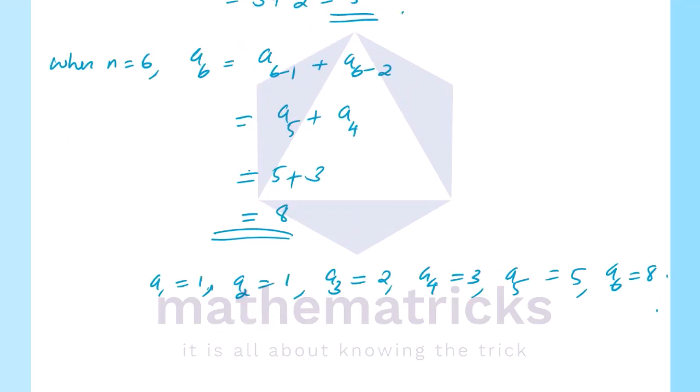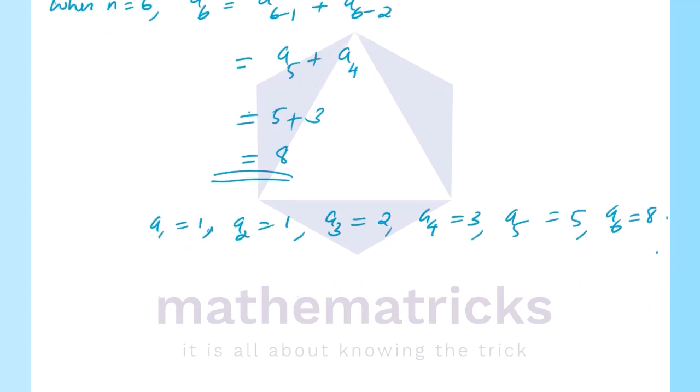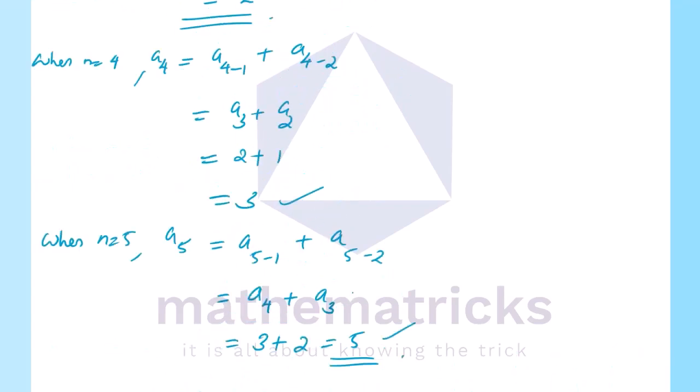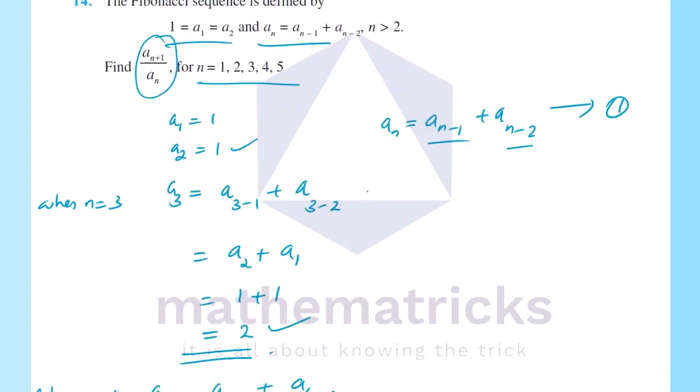So we have: a1 equal to 1, a2 equal to 1, a3 equal to 2, a4 equal to 3, a5 equal to 5, a6 equal to 8. Now let's compute a_{n+1} divided by a_n for n equal to 1, 2, 3, 4, 5.